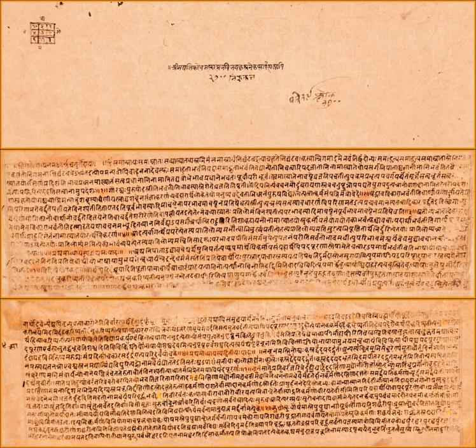Yaska, the sage who likely lived around the 7th century BCE, approached this problem through a semantic analysis of words, by breaking them down into their components and then combining them in the context they were used, to propose what the archaic words could have meant.